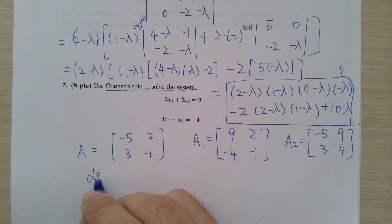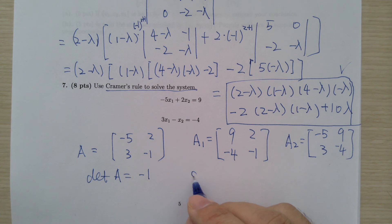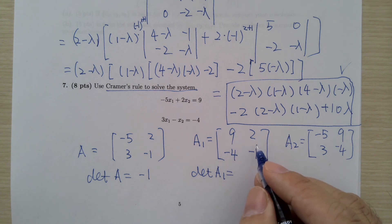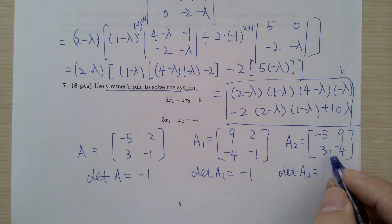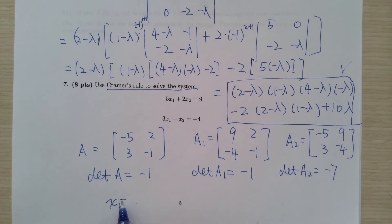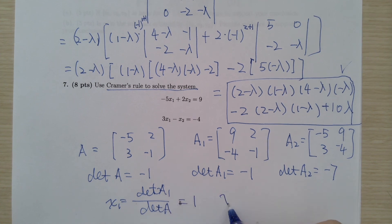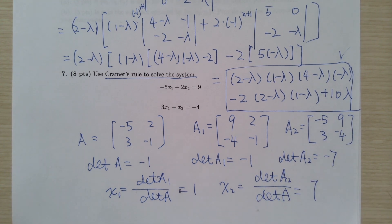The determinant of A is 5 - 6 = -1. The determinant of A1 is -9 - (-8) = -9. The determinant of A2 is 20 - 27 = -7. Therefore x1 = det(A1)/det(A) = -9/-1 = 9... wait — so x1 equals 1 and x2 equals det(A2)/det(A) = 7.